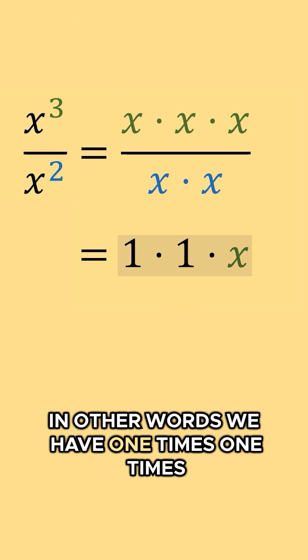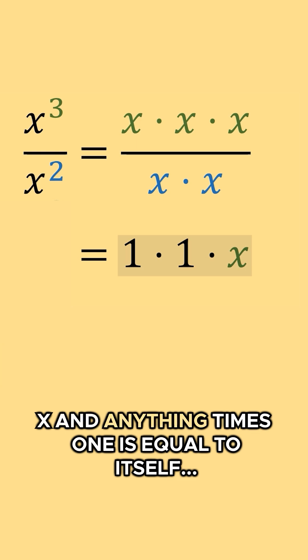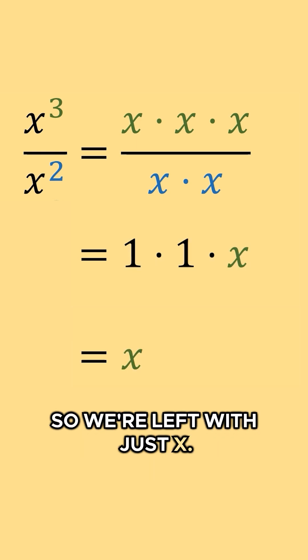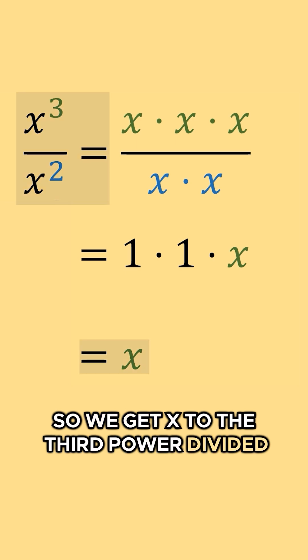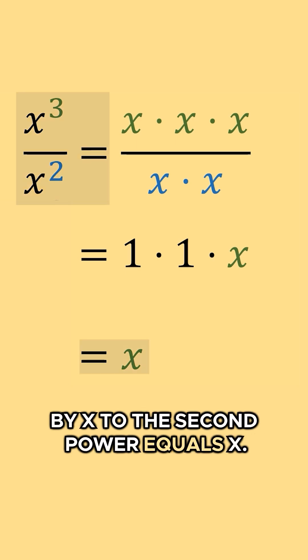In other words, we have one times one times x. And anything times one is equal to itself, so we're left with just x. So we get x to the third power divided by x to the second power equals x.